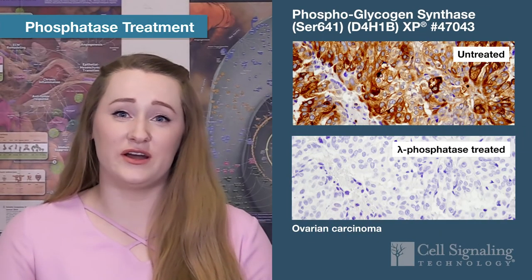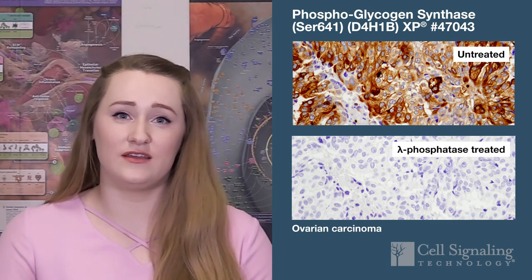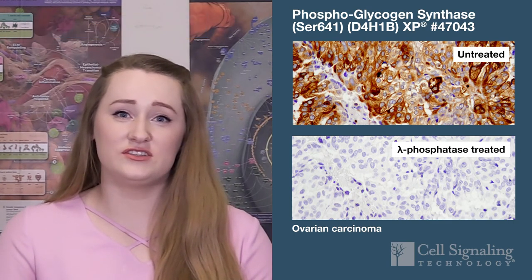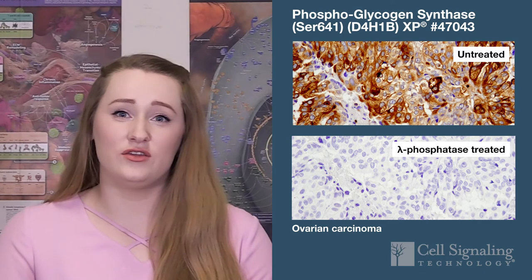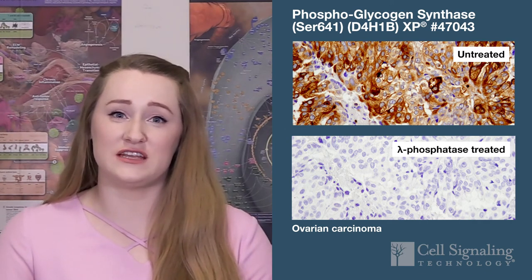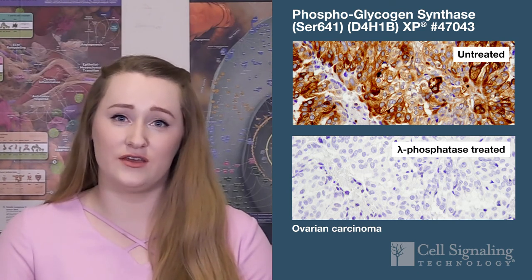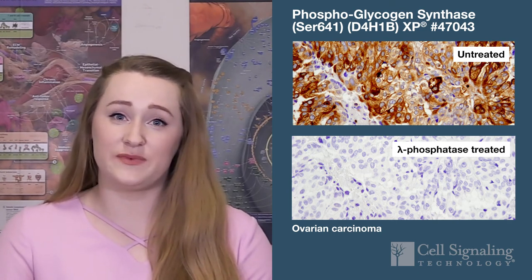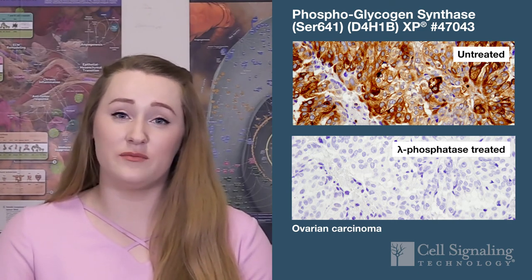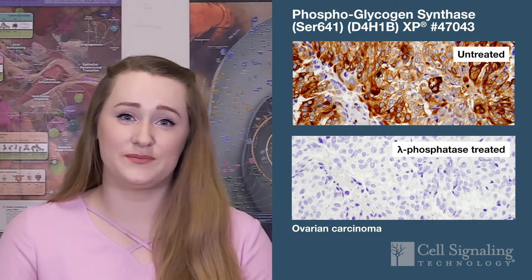Phospho-specific antibodies detect proteins only when they are phosphorylated. In addition to the controls mentioned earlier, you can treat your tissue sample with phosphatase to remove phosphate groups and test the phospho-specificity of your antibody. You should expect to see complete abolishment of staining in phosphatase-treated tissues.